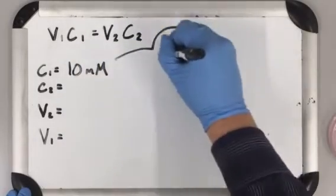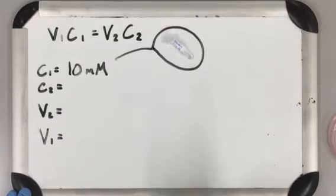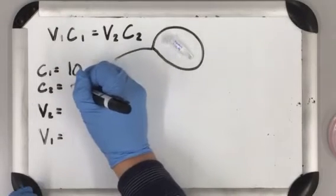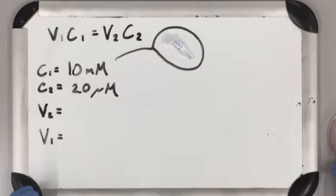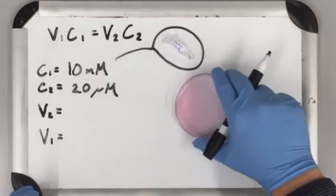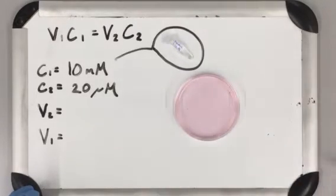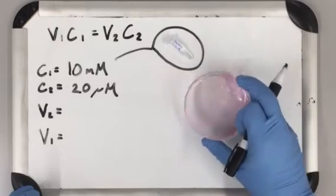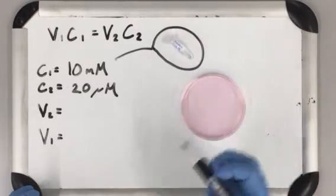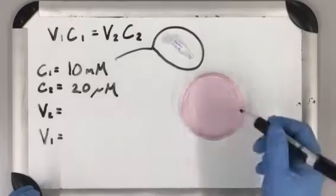I want that to go to 20 micromolar for the test I'm doing. The test is on these cells you see here in this red liquid—that's the media. They're just spinning around. The final volume, which is already set over here, is 5 ml.